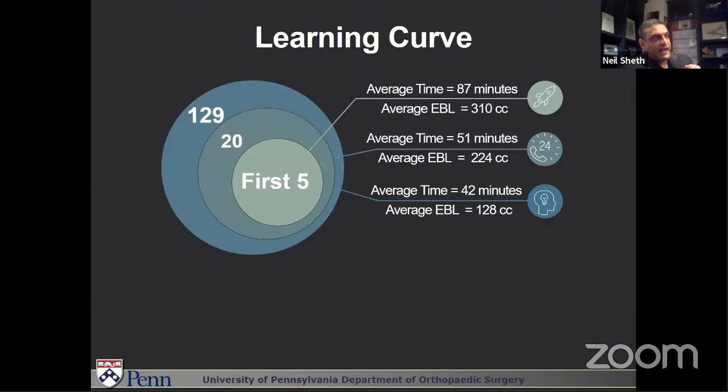We're now at close to our 400th anterior hip in the last four years. I can do this procedure now on a normal complexity patient with a resident and be done in less than 35 minutes, with the resident doing probably at least two-thirds of the procedure, including the exposure and the acetabulum.